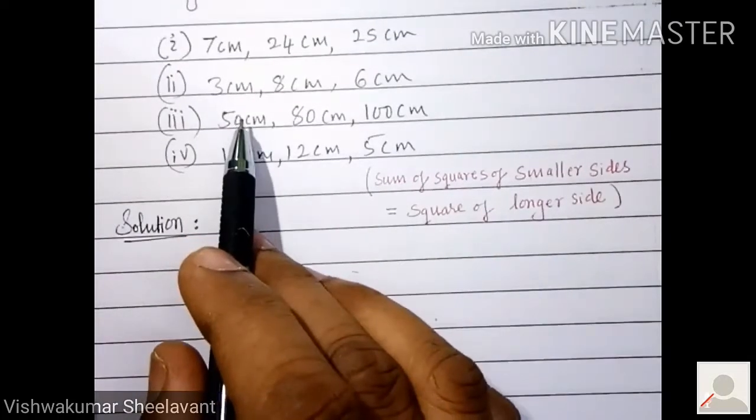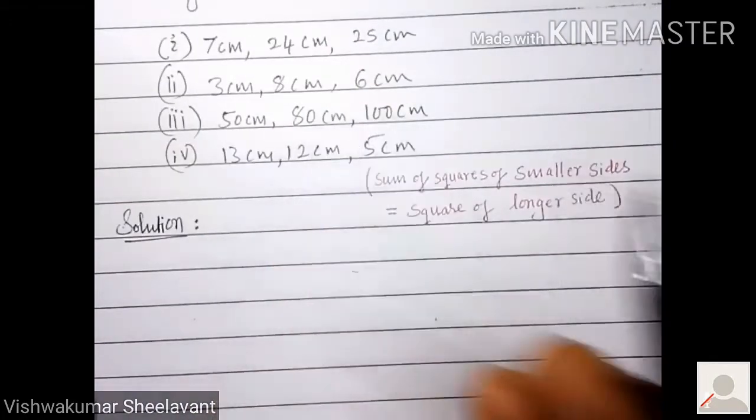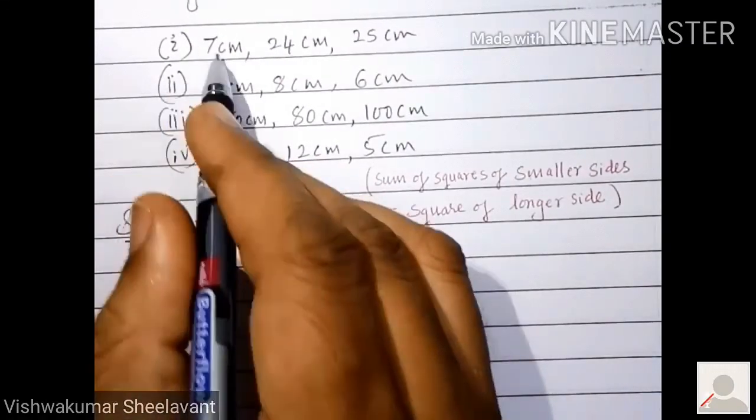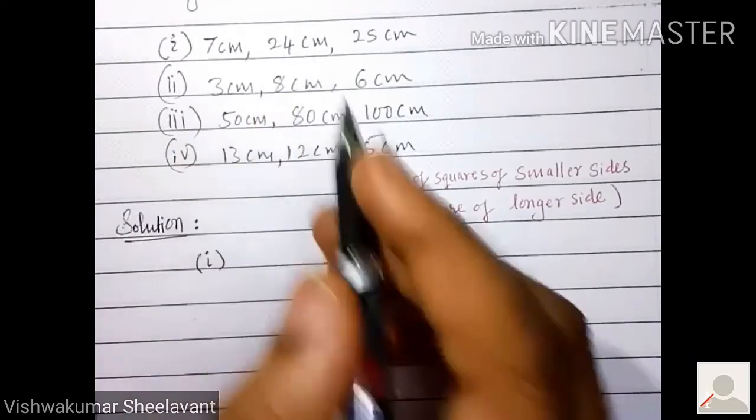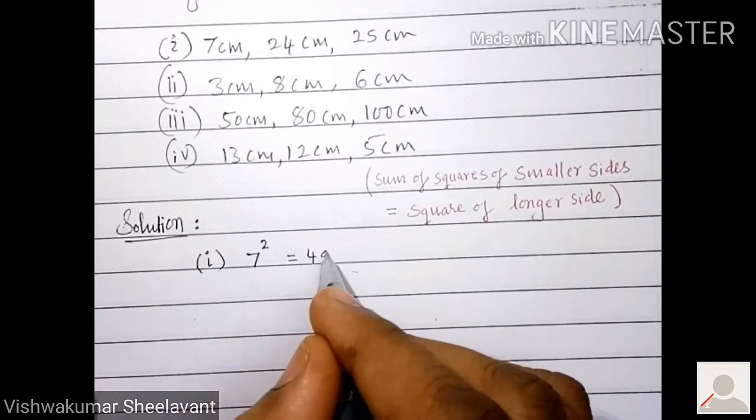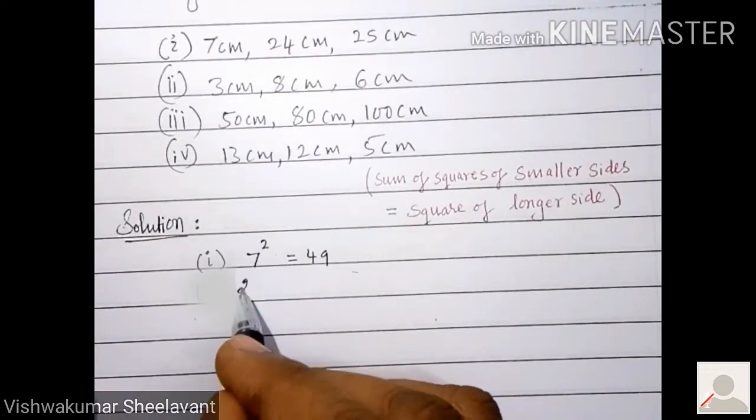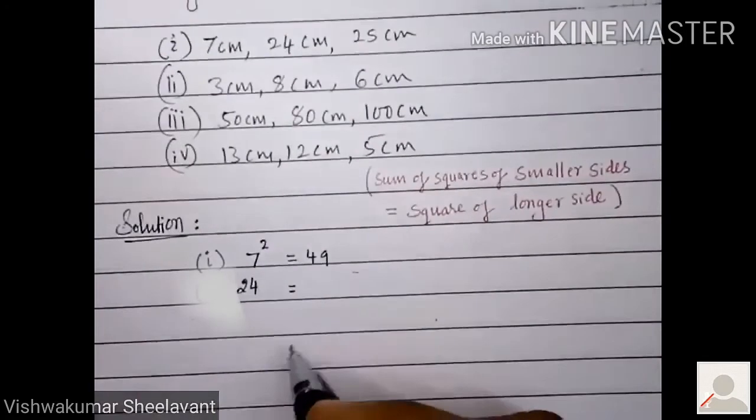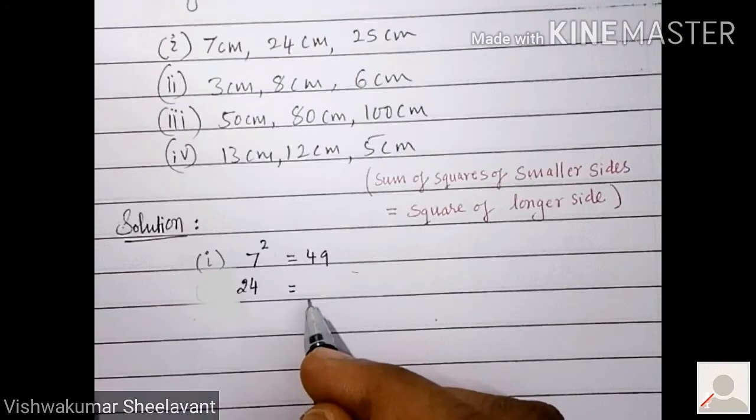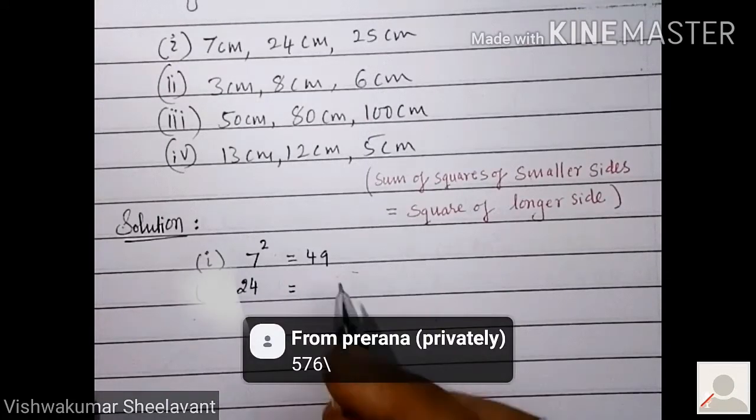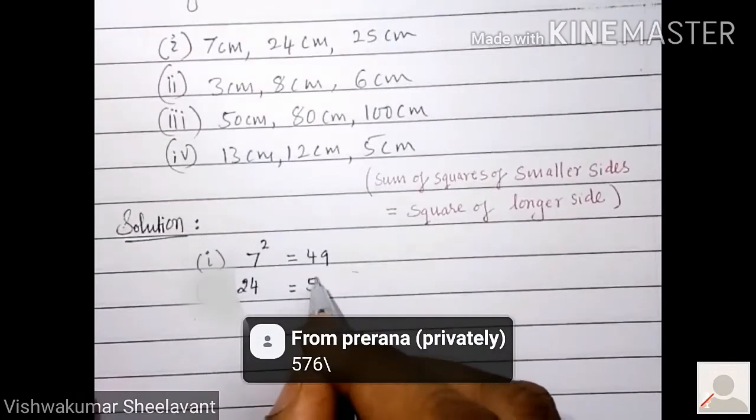Smaller side here is 7 and 24, right? So 7 square is 49, then you have 24. 24 square is how much? Anyone? 576.